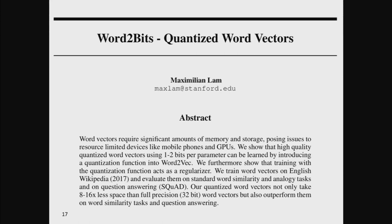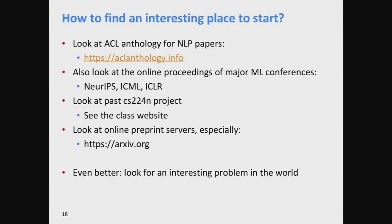You can find lots of other projects online if you look at the CS224N pages. If you want to do a final project, you have to find some place to start. One place is to start looking at papers — there's an online anthology of most NLP conference papers, ML conferences have lots of relevant papers, and you can look at past CS224N papers. But don't also forget to look for an interesting problem in the world. Stanford CS Emeritus Professor Ed Feigenbaum likes to quote the advice of his advisor Herb Simon: if you see a research area where many people are working, go somewhere else.